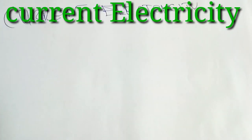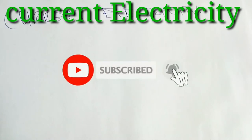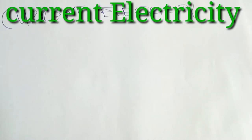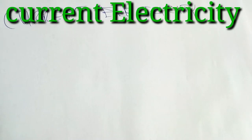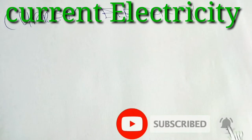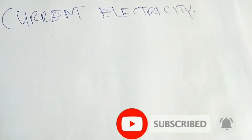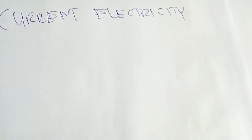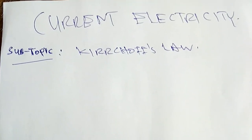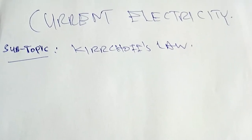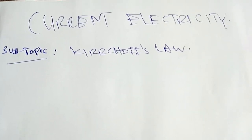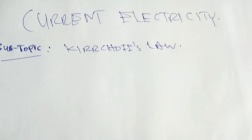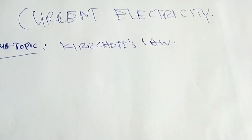Welcome to our lesson of the day. Today we will discuss current electricity, which is a branch of electricity dealing with electrons in motion. Our subtopic today is Kirchhoff's law, which is normally divided into two parts: the first is current Kirchhoff's law, and the second is voltage Kirchhoff's law.